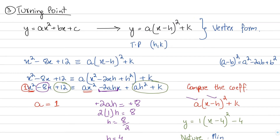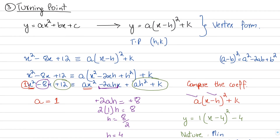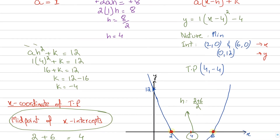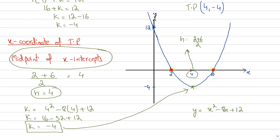The most preferable method for the turning point is still converting to vertex form. This video was long because I needed to explain all the concepts. In the next video, we'll get straight to the point and do some more example questions, so make sure you watch that as well.